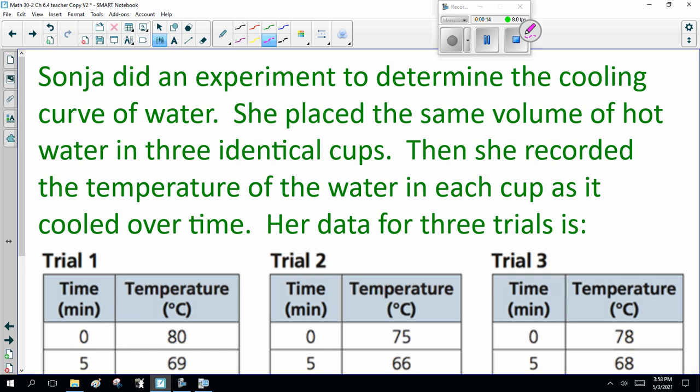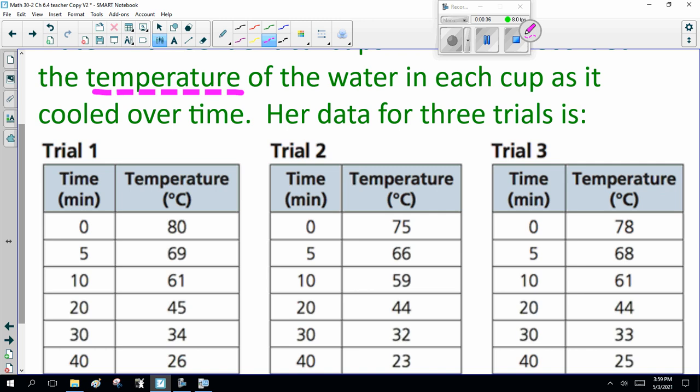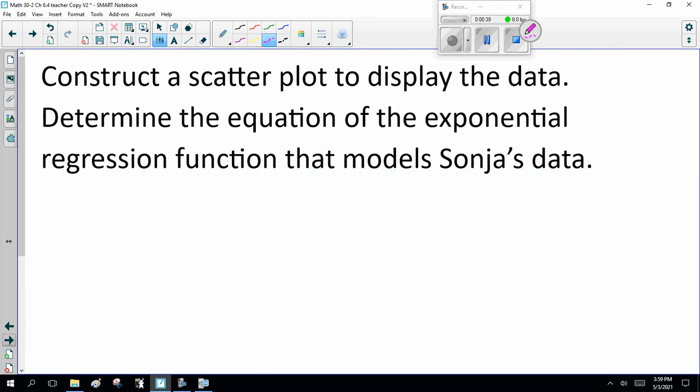Next question. Sonja did an experiment to determine the cooling curve of water. She placed the same volume of hot water in three identical cups. She then recorded the temperature of the water in each cup as it cooled over time. Her data for three trials is this. Construct a scatter plot to display the data. Determine the equation of the exponential regression function of the model.